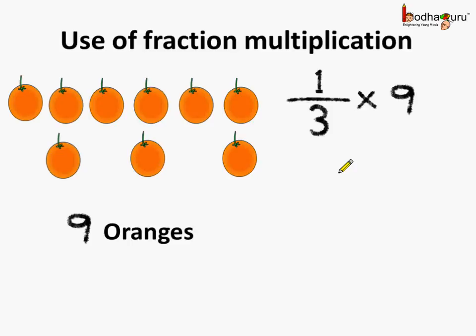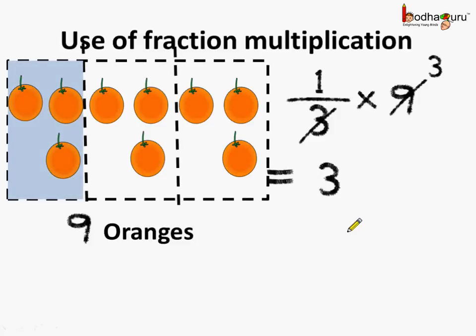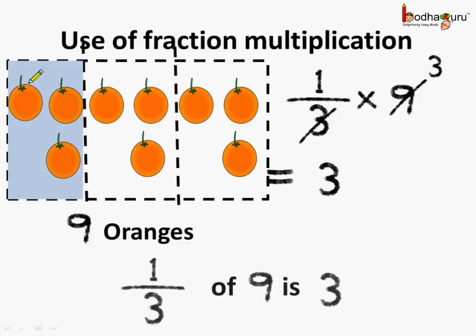So 1/3 multiplied by 9. We already know the whole number gets multiplied by the numerator. And if we reduce this further — 3 times 3 is 9 and 3 ones are 3 — so we get 1 multiplied by 3 which is equal to 3. So we understand that 1 third of 9 is 3.